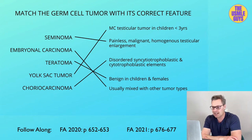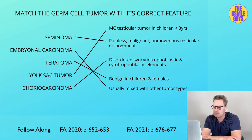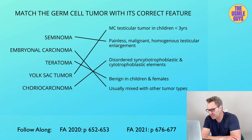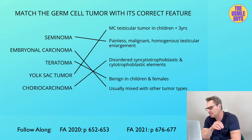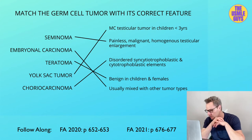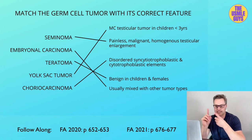Germ cell tumors account for the vast majority of testicular tumors. Specific risk factors include cryptorchidism and Klinefelter syndrome. The seminoma is the most common testicular tumor and is malignant. It presents with a painless and homogenous enlargement of the testis. It will not be seen in infants. On histology, watch for that classic fried egg appearance, and also look for increased PALP on labs. This tumor has an excellent prognosis because it's late to metastasize and very responsive to radiotherapy.